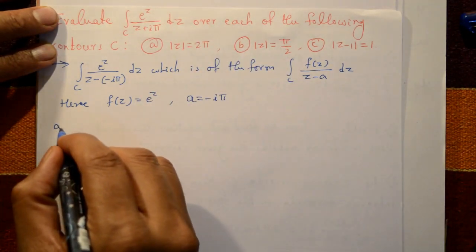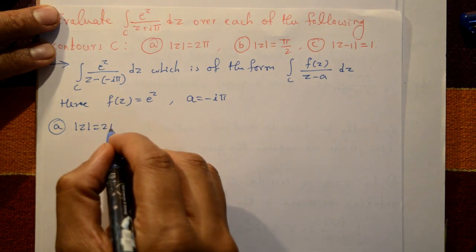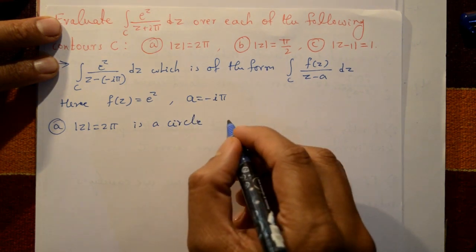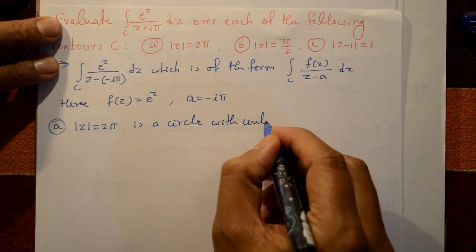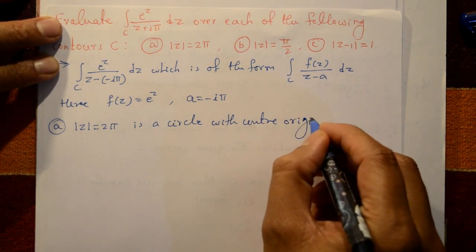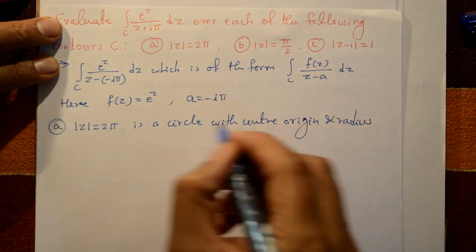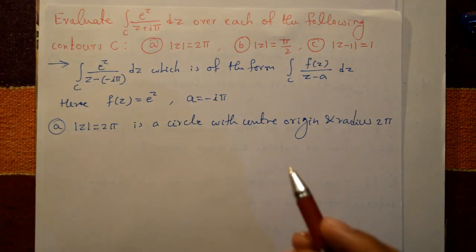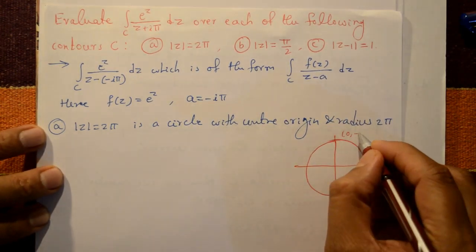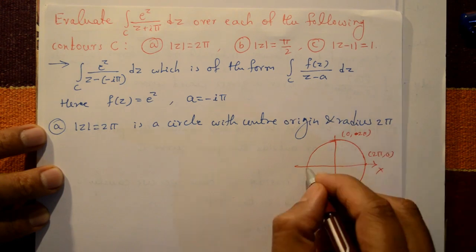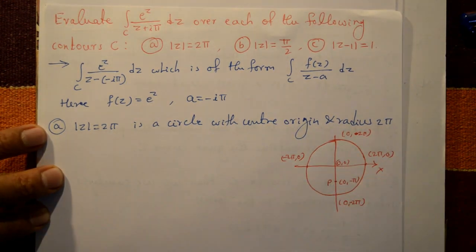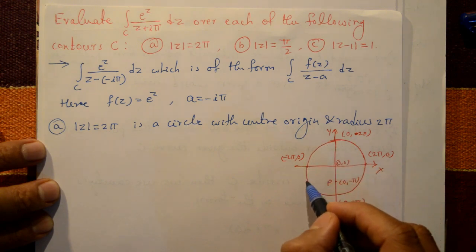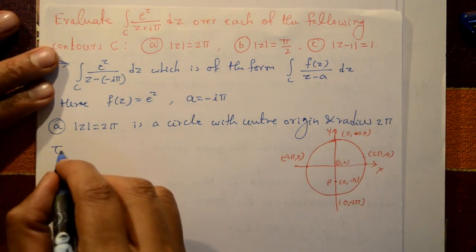Case 1: |z| = 2π. This is a circle with center at the origin and radius r = 2π. The diagram shows the x and y axes with origin at center and radius 2π.